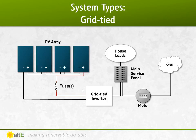In a grid-tied system, the solar panels are wired through fuses to a grid-tied inverter. The inverter is wired to a new breaker in your main AC panel. The electric company may require you to switch out your power meter to a bi-directional meter, which can spin backwards when selling power and forward when buying. This is known as net metering.